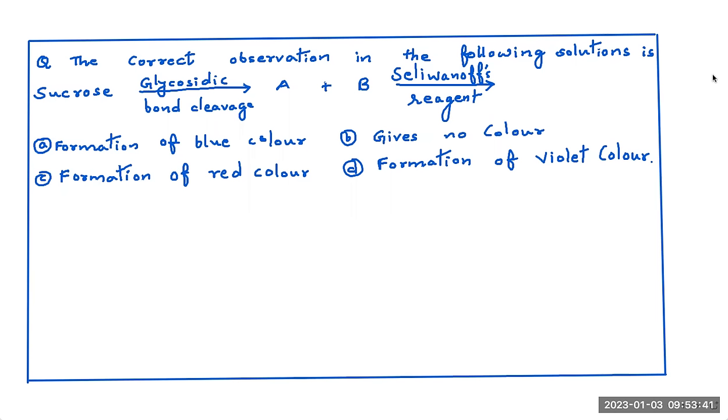The question which comes here is: the correct observation in the following solutions is. In this reaction, we need to identify this in the given reaction. Sucrose C12H22O11. It is mentioned above the arrow that we need to cleave, that is we need to break, we have to carry out the fission of the glycosidic bond.